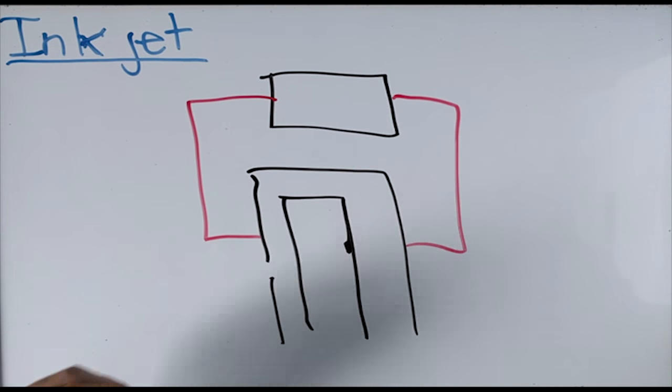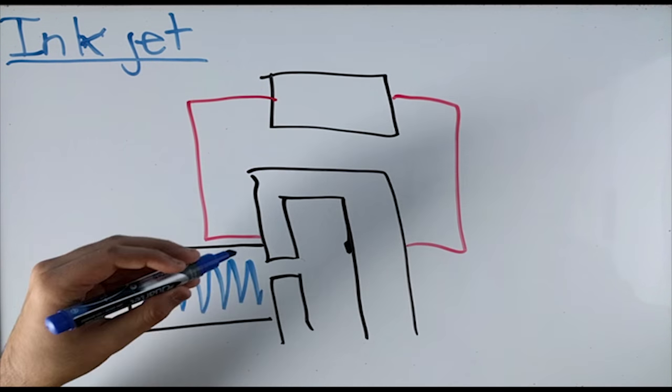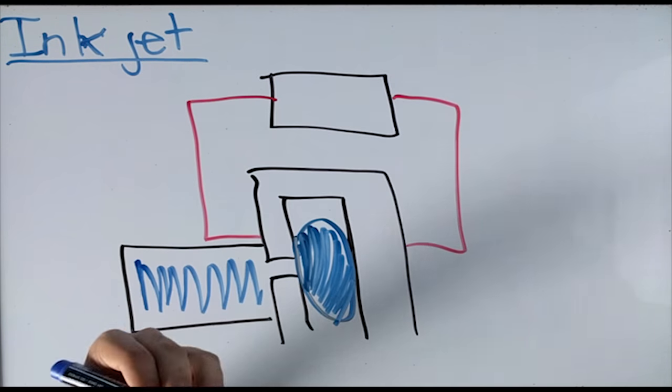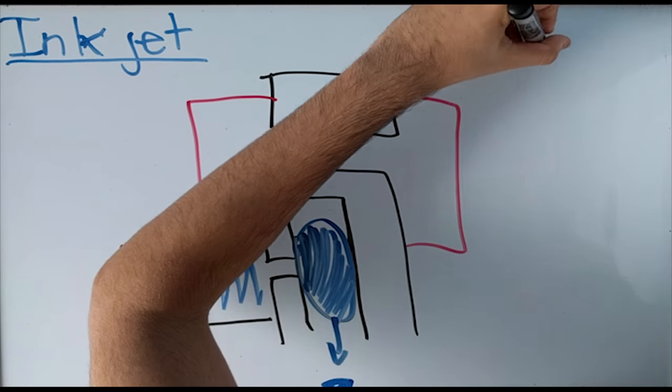It actually functions in the exact same way it's named. A small jet the size of a hair shoots out a blob of ink, but how? This all happens in a few steps. The instructions from the computer tell the printer which nozzles to fire from to form a character.